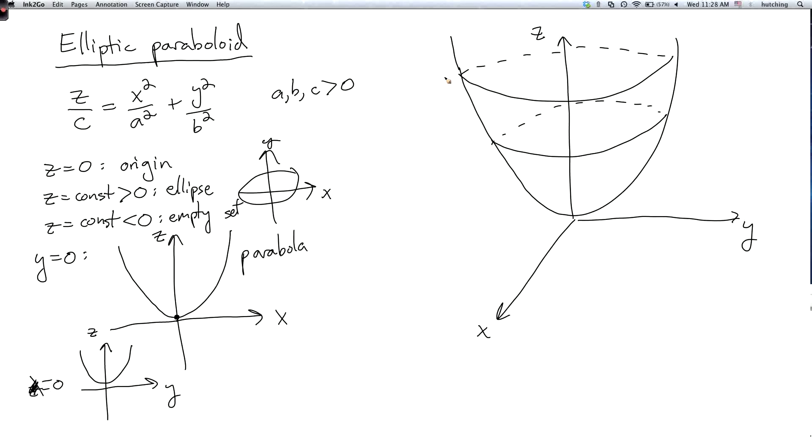Also if we took c negative we would get an upside down elliptic paraboloid which would be below the xy plane.